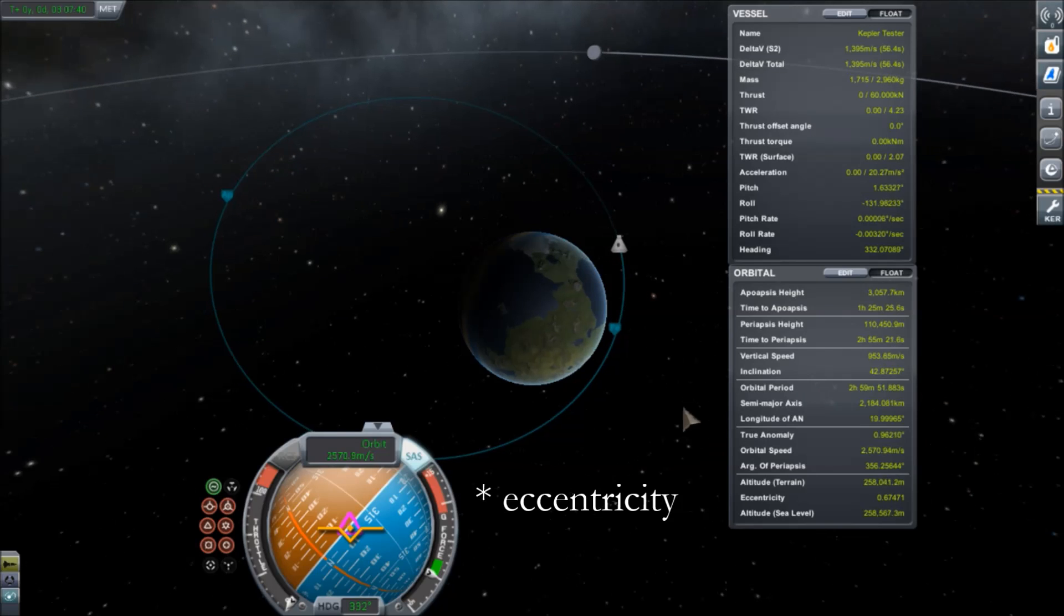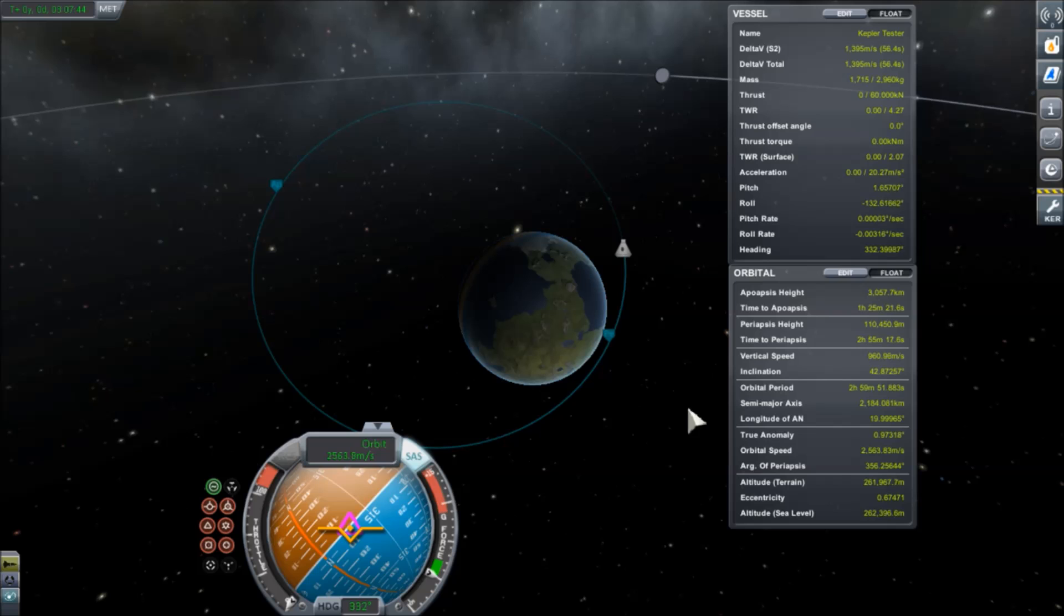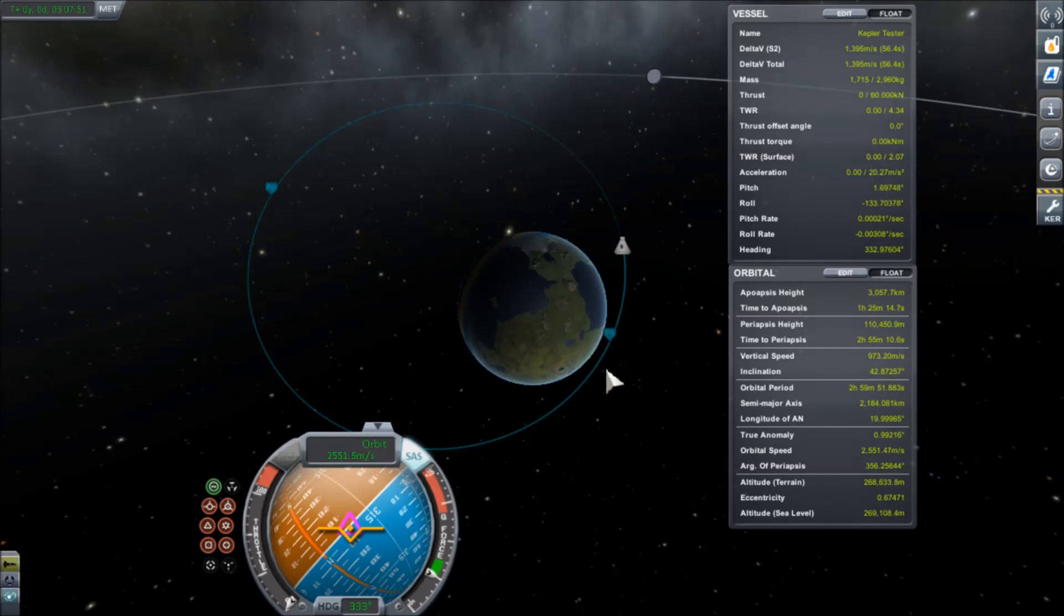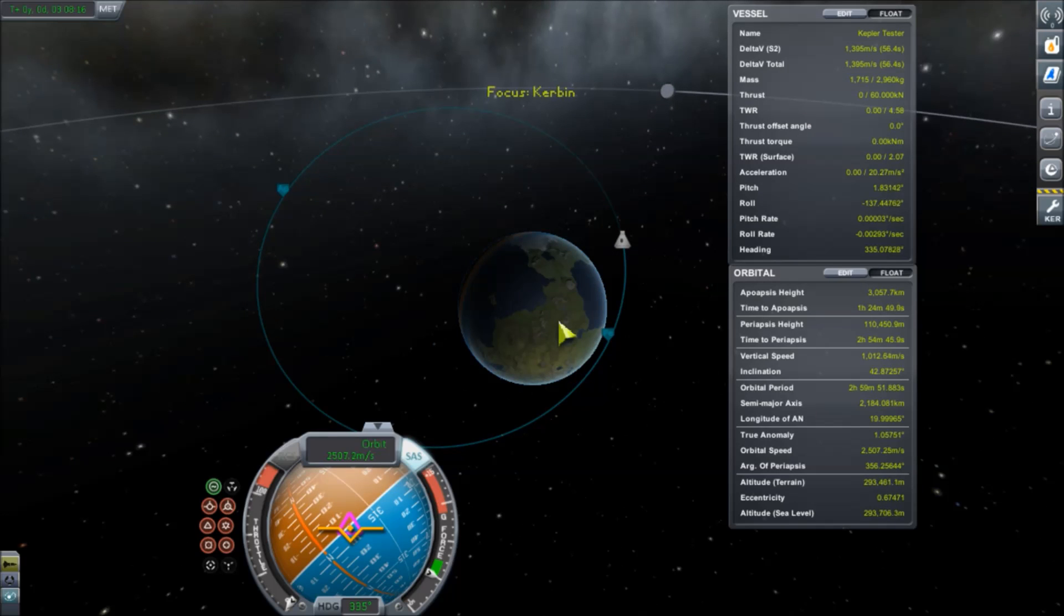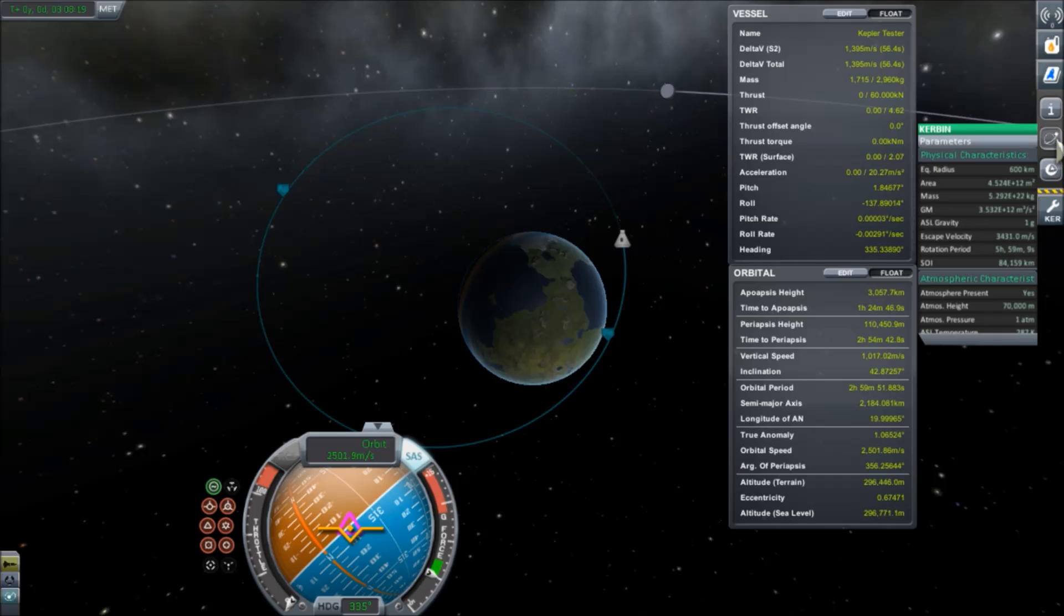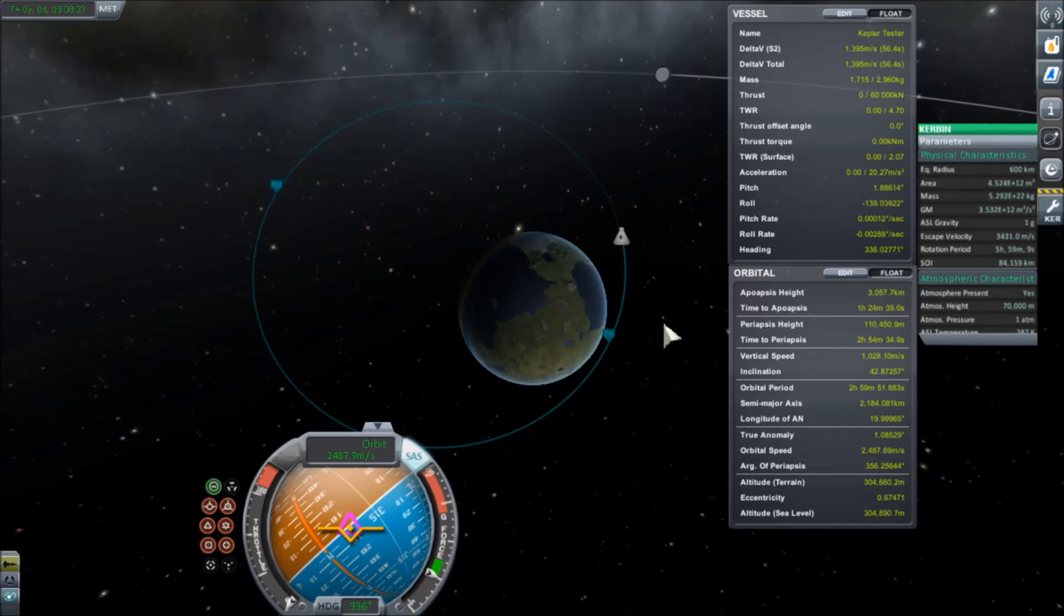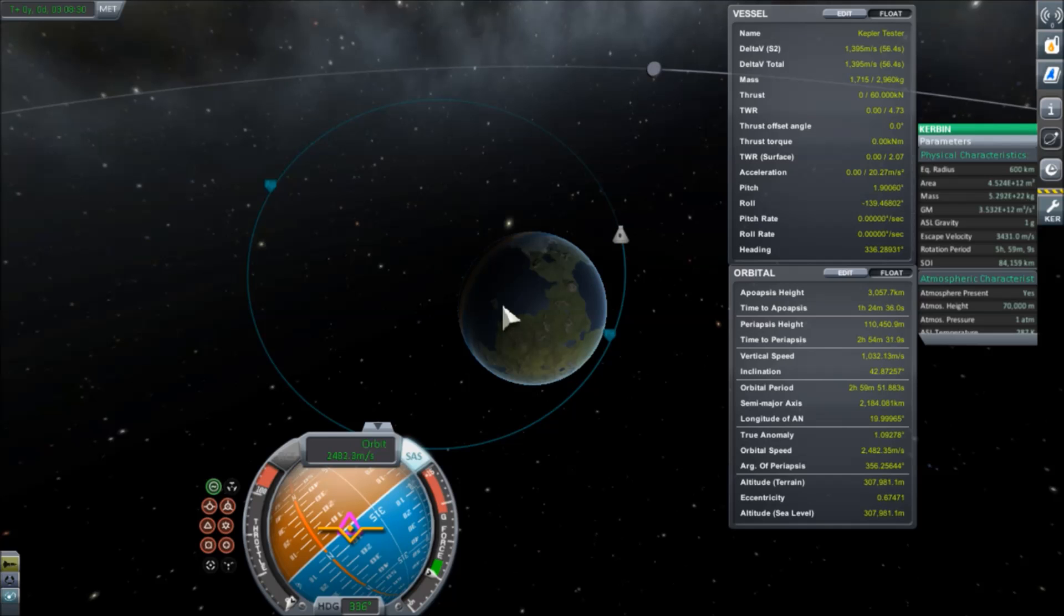So let's see how the apoapsis shakes out. If you remember, the distance equation is apoapsis equals the semi-major axis times 1 plus the eccentricity. So when we do that, we get 3,657.7 kilometers. So if you look, the apoapsis height here is 3,057.7 kilometers. So where did those missing 600 kilometers go? So, well,